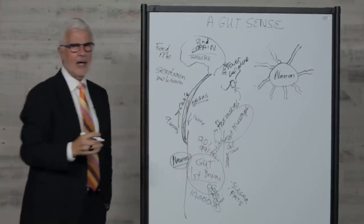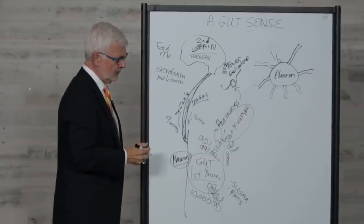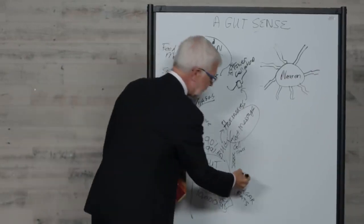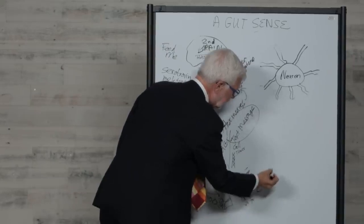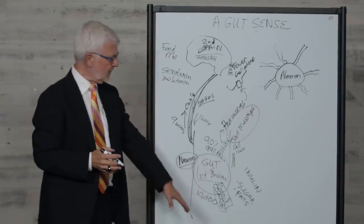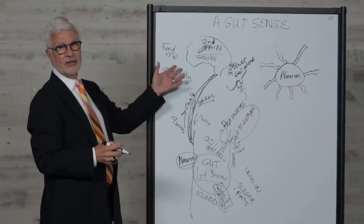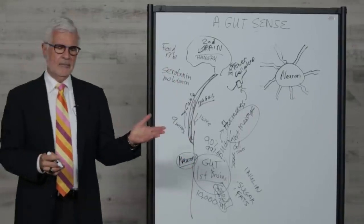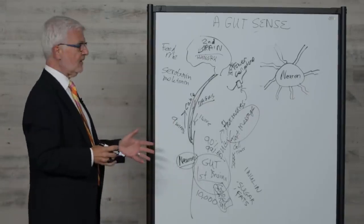The converse is true. The good bugs actually want complex sugars, resistant starches, inulin. If you give them what they want over a few weeks, they'll actually drive out the gang members and start sending messages to your brain to feed them what they want.